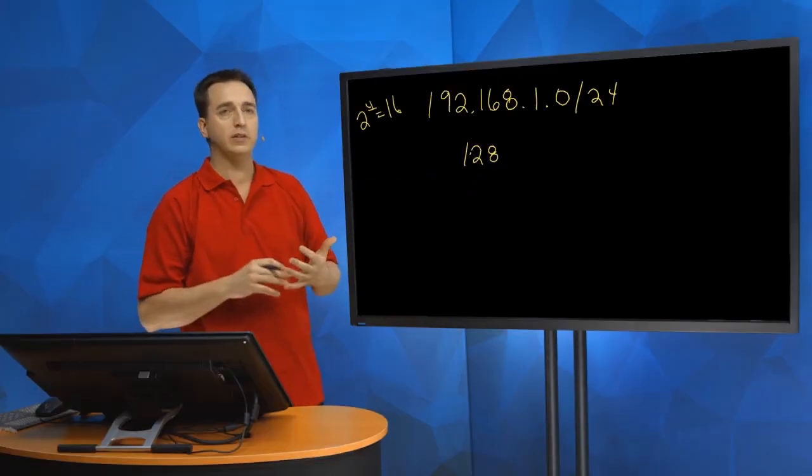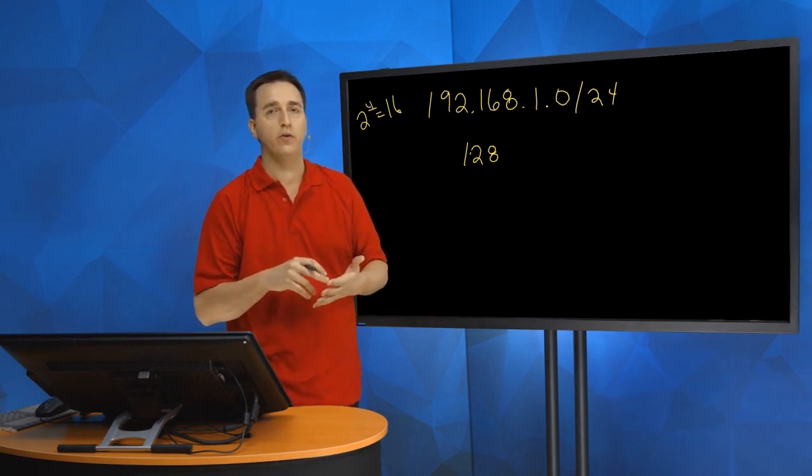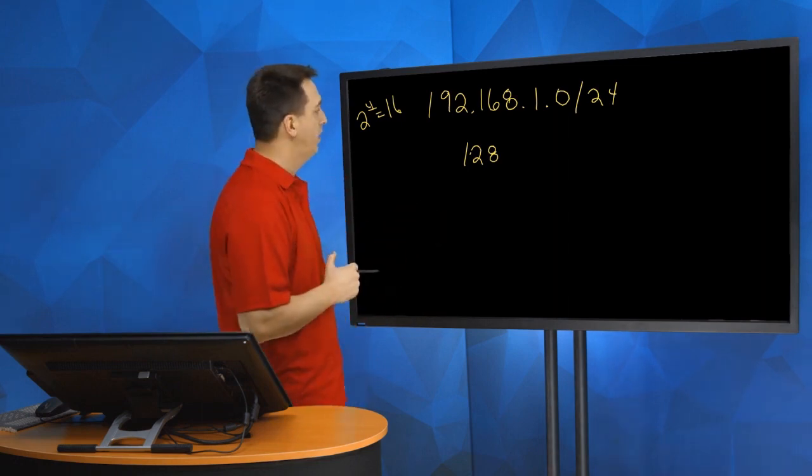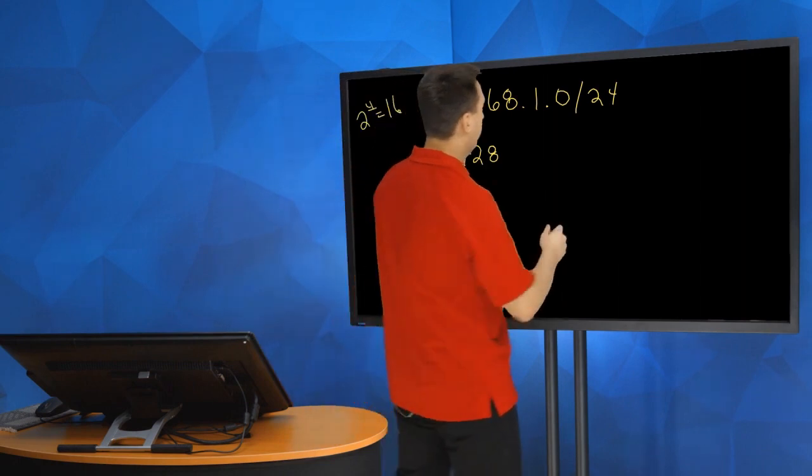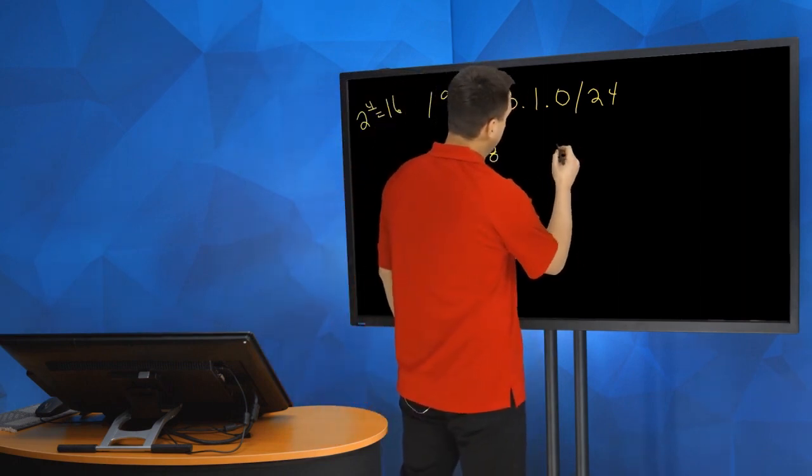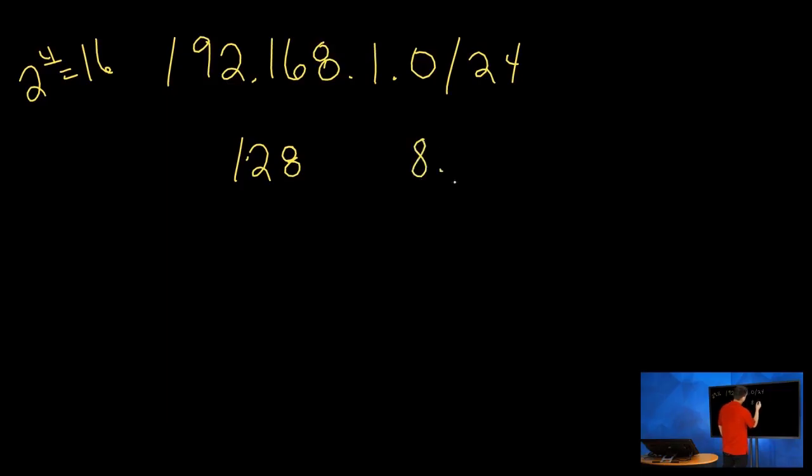Now with our new subnet mask, I want to figure out what the first subnet ID is, the second, third, fourth, fifth, because we created 16 of them. We know it's /28, our new subnet mask. What I like to do is go okay, we have 8 bits here, 8 bits in the second octet, 8 bits in the third octet, so it's 8, 8, and 8, that's 24.